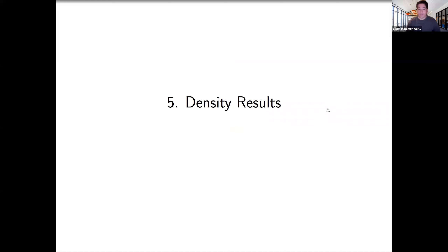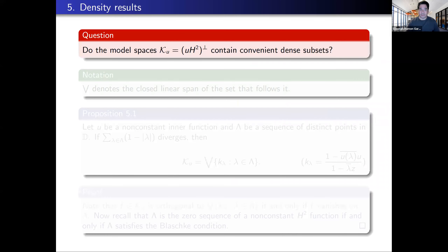Our next topic is density results in model spaces. The question is going to be: do the model spaces K_U, or in other words U⊥ in H², where U is an inner function, contain convenient dense subsets? Having a dense subset of recognizable and easily handleable functions will allow us to get a grasp on these rather abstract spaces, which are phrased as orthocomplements of more traditionally defined explicit spaces.